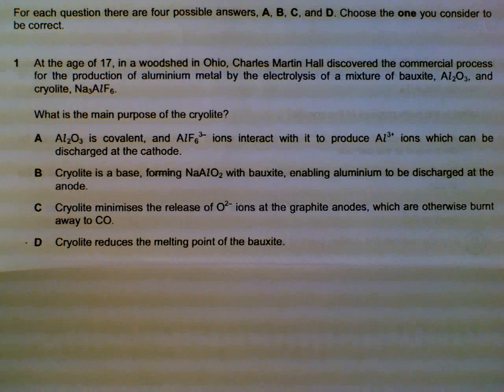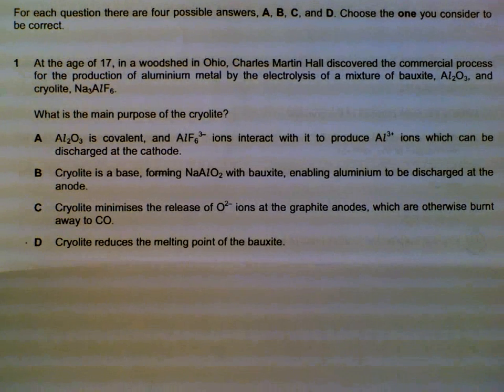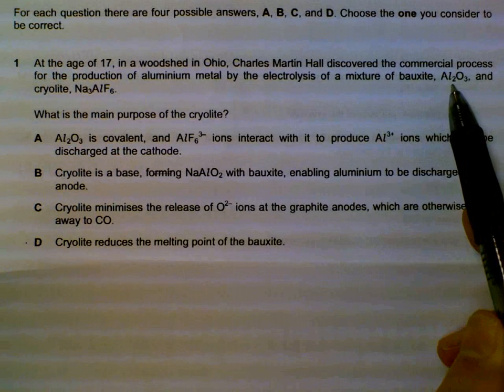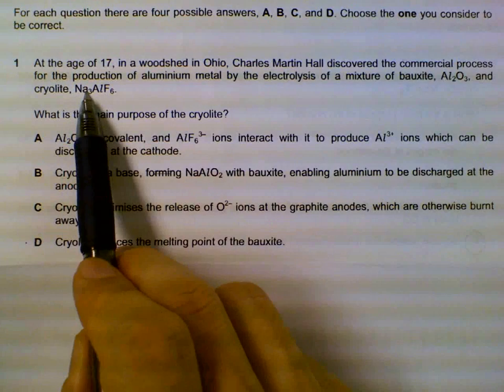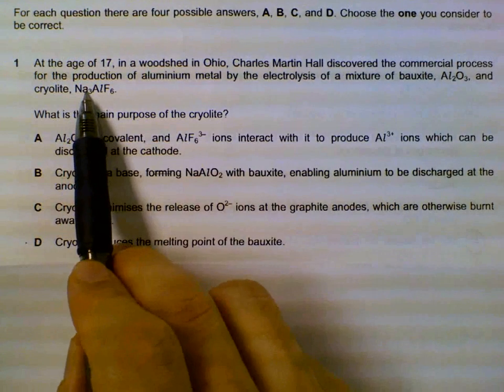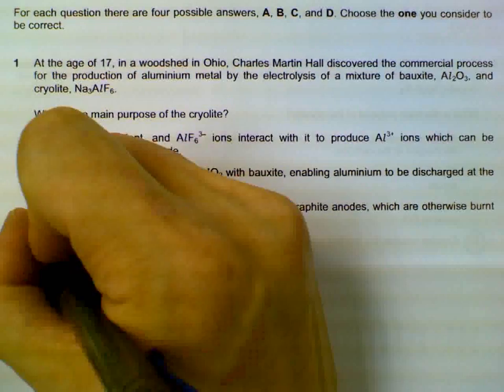Number one, electrolysis of aluminum oxide. Aluminum oxide on its own has a high melting point, so for electrolysis we actually add cryolite to lower down the melting point so that we use less energy. So that's the purpose of cryolite.